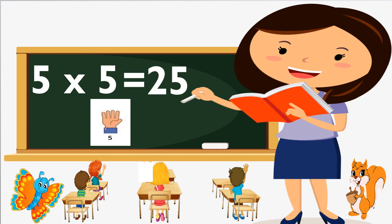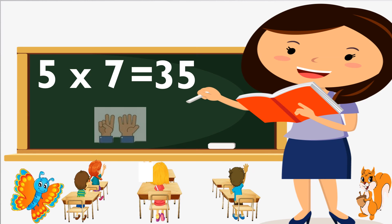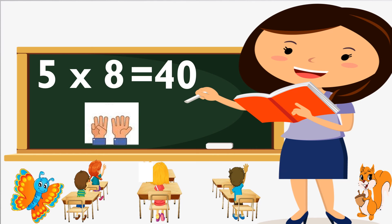5 fives are 25. 5 sixes are 30. 5 sevens are 35. 5 eights are 40.